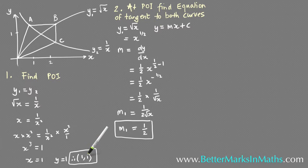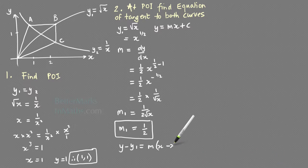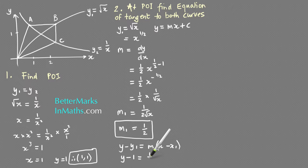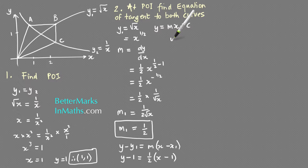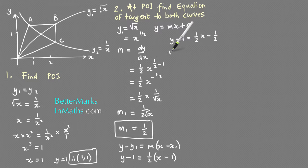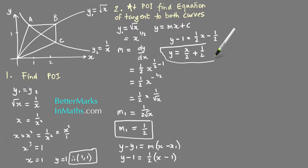Using the point of intersection (1, 1) and gradient m1 = 1/2 in the formula y minus y1 equals m(x minus x1): y minus 1 equals one half times (x minus 1). Expanding and simplifying gives y equals x over 2 plus one half. That's the equation of the first tangent.